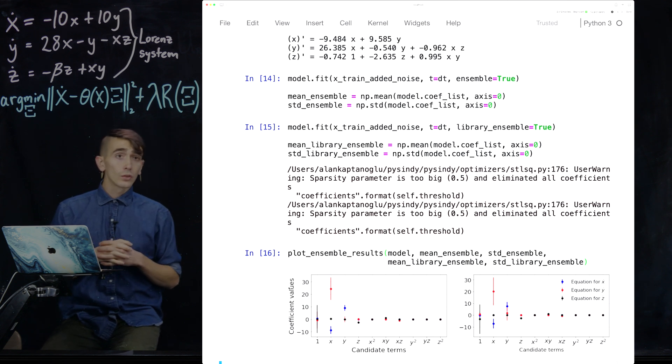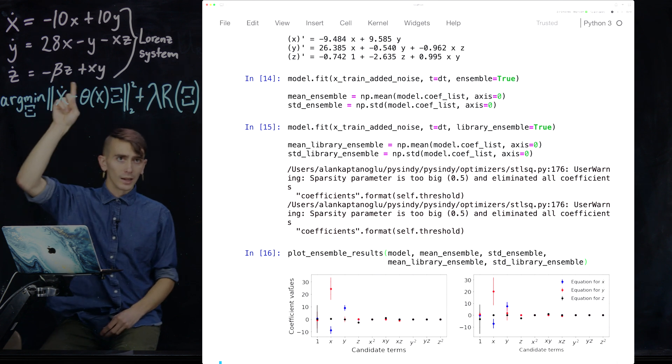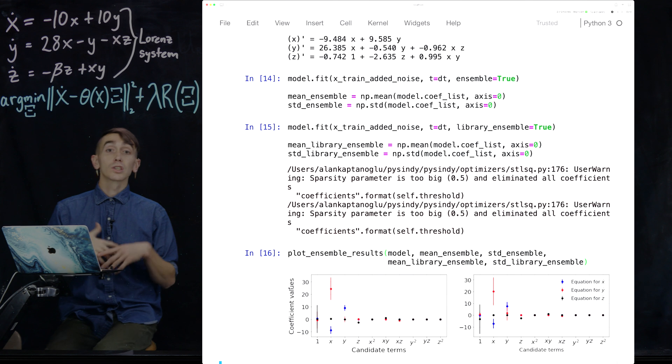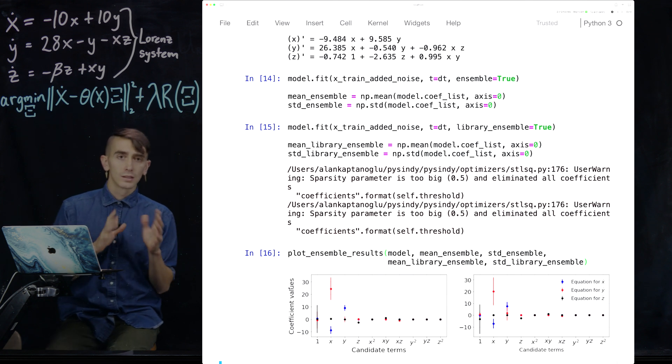Things are a little worse for the library ensembling because the library ensembling is actually chopping off one of the library terms at each for each of these models. And actually some of the very important terms might get chopped off like this x, y term might get chopped off. And then you're actually missing fundamental dynamics in your candidate library. So the fit is going to be overall worse at the end.